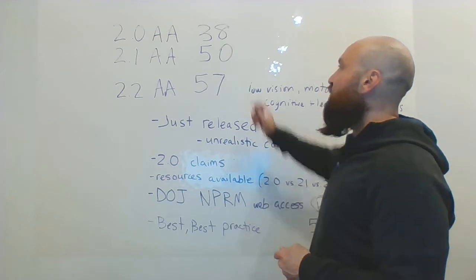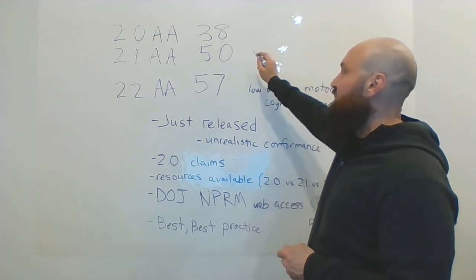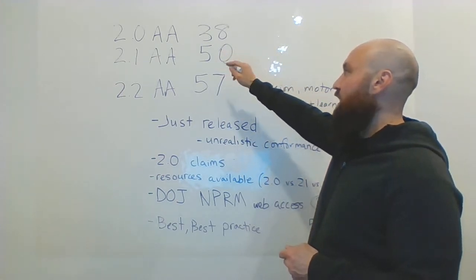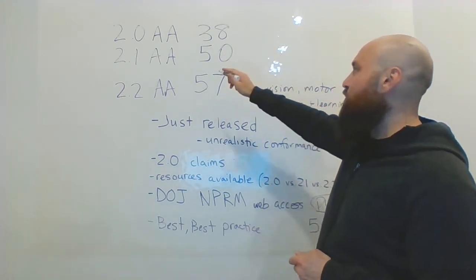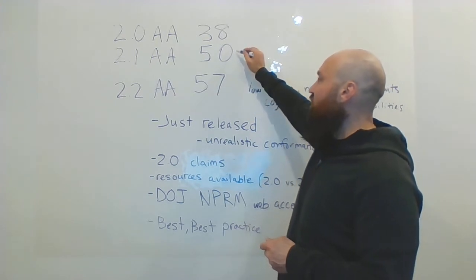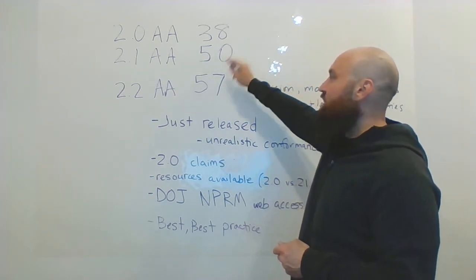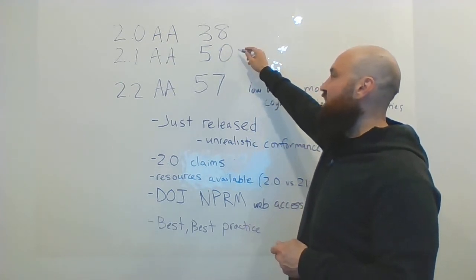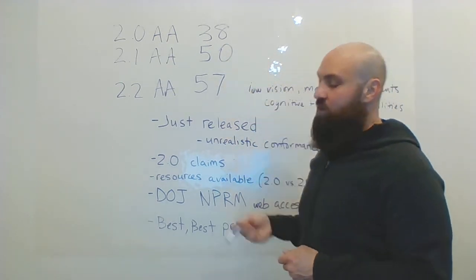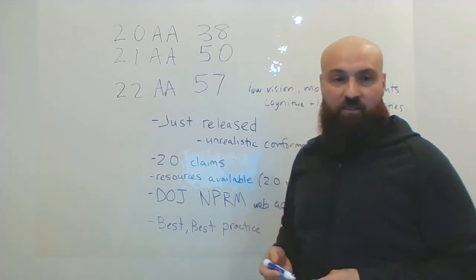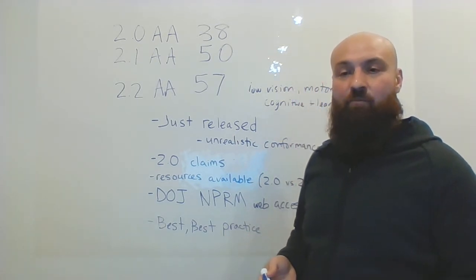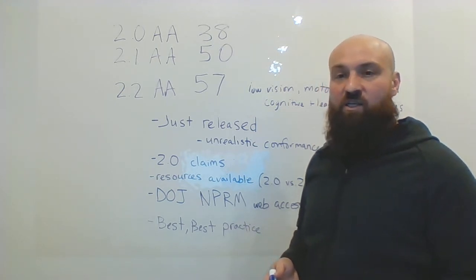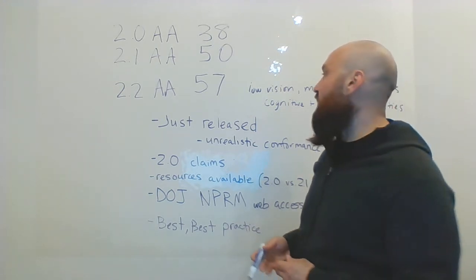Then 2.1 added 12 additional success criteria to 2.0, so nothing was undone with 2.0, just 12 additional things were added to it. What's important to keep in mind with the web content accessibility guidelines is they are backwards compatible, which means nothing is ever undone by a new version, it just merely adds to it.